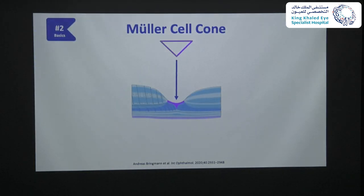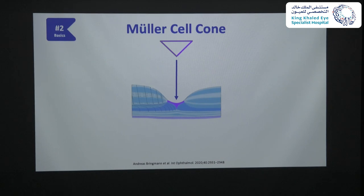There is also another population of Müller cells in the foveola called the Müller cell cone, because it looks like an inverted cone. This specialized type of Müller cell contributes to the maintenance and integrity of the foveal walls, which surround the central foveola, acting as a glue. We will discuss this later in clinical cases.